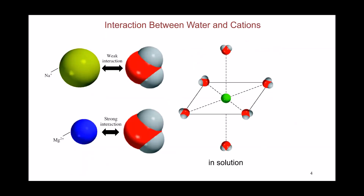Each ion gets surrounded by a large number of solvent molecules, so you have a huge number of interactions that are collectively strong enough to overcome the attraction between the ion and the other anion — that's why the polar solvent is able to dissolve it. This is called the solvation energy or solvation power of the polar solvent, and it grows stronger as the charge on the ion is larger.